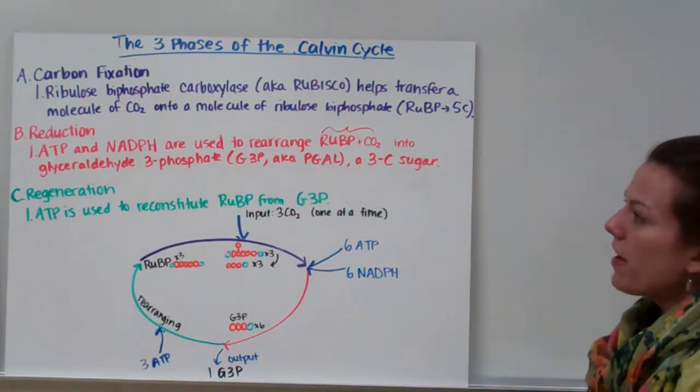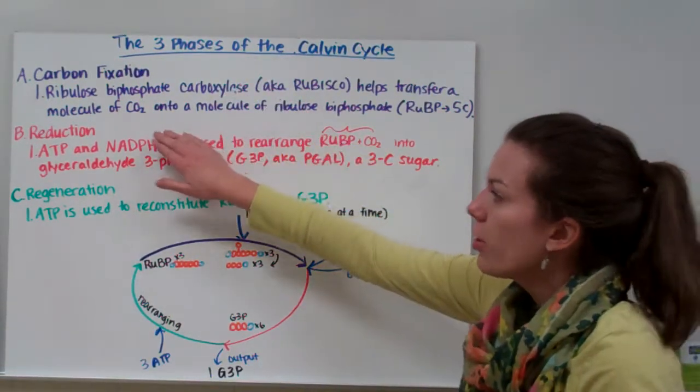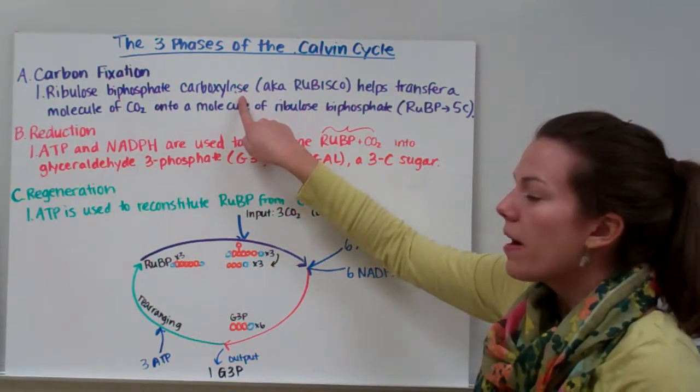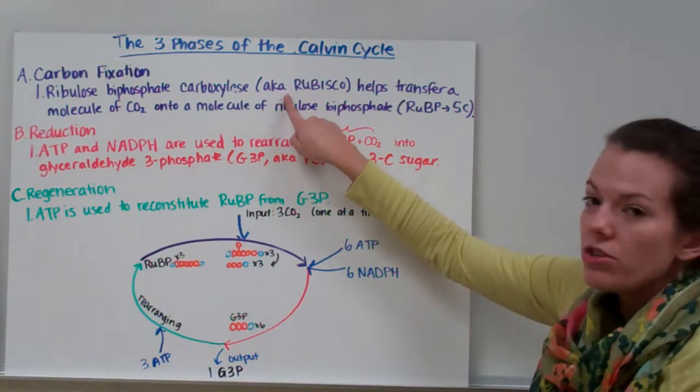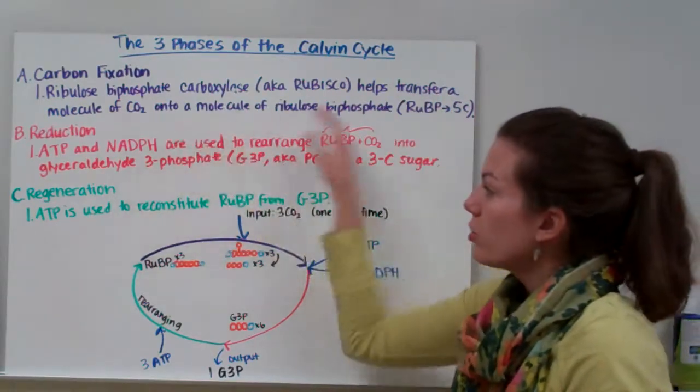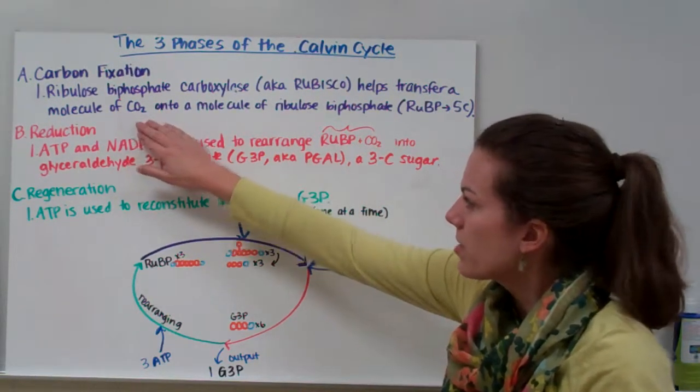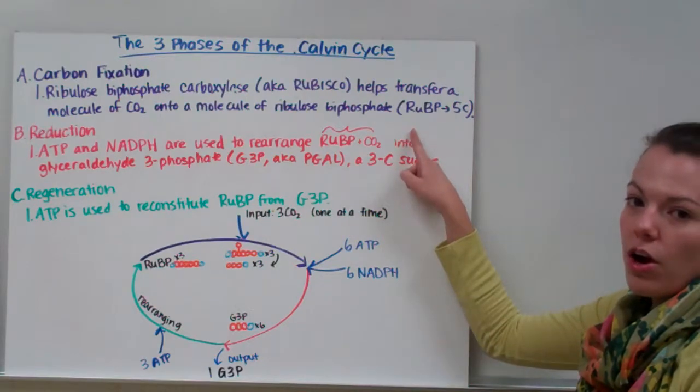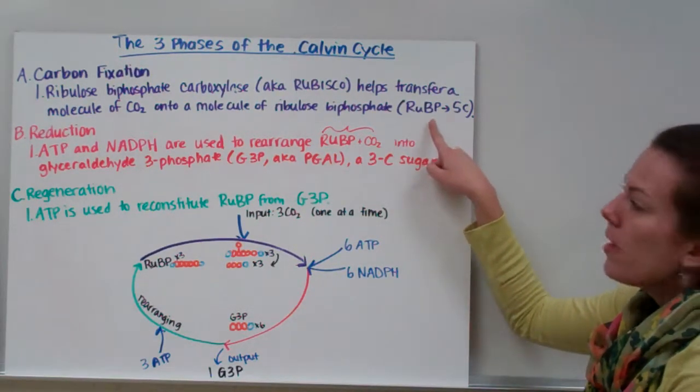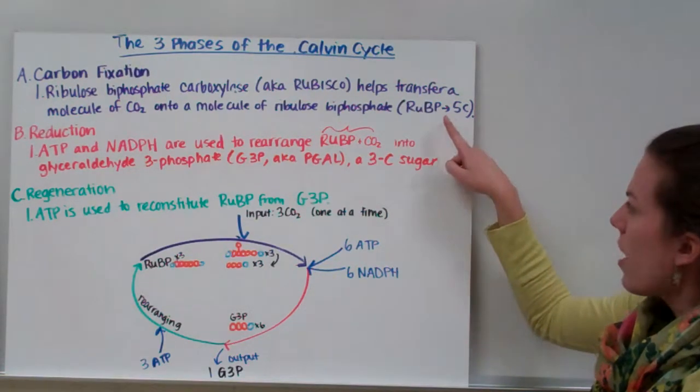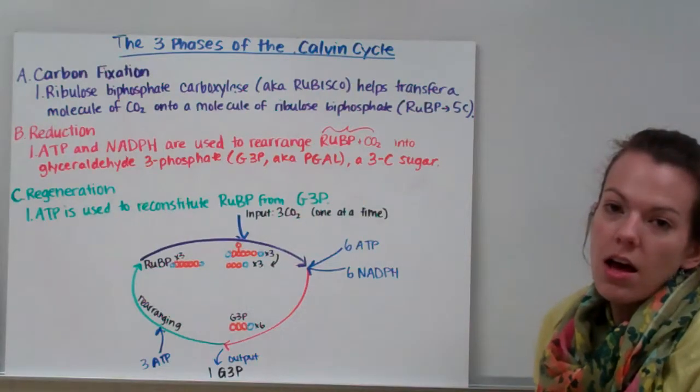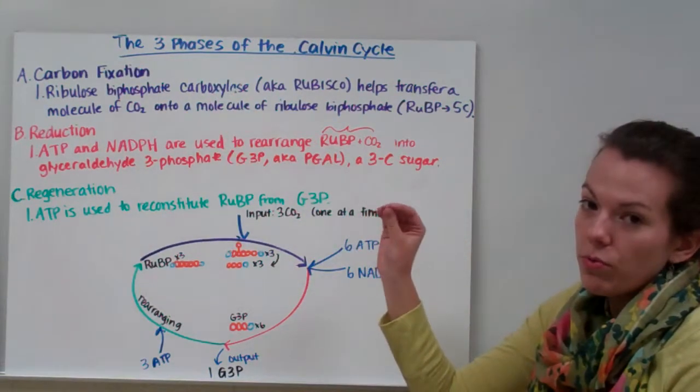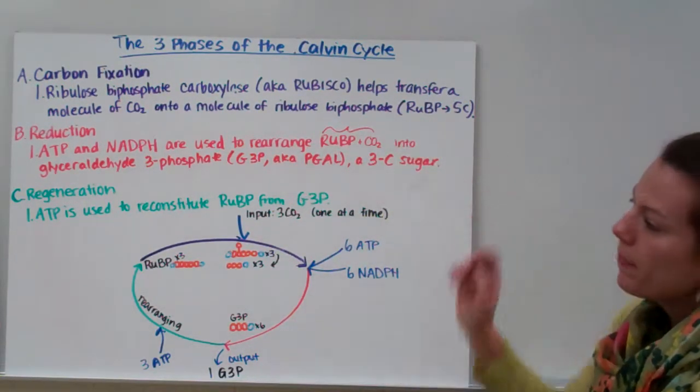The Calvin Cycle has three phases. The first phase is carbon fixation. During carbon fixation, ribulose-biphosphate-carboxylase—remember, ACE means it's an enzyme—also known as rubisco, helps to transfer a molecule of carbon dioxide onto a molecule of ribulose-biphosphate. Ribulose-biphosphate is known as RUBP. RUBP has five carbons, so when you add RUBP to carbon dioxide, which has one carbon, you get a six-carbon intermediate. So rubisco adds carbon dioxide onto RUBP, and that's our first phase.